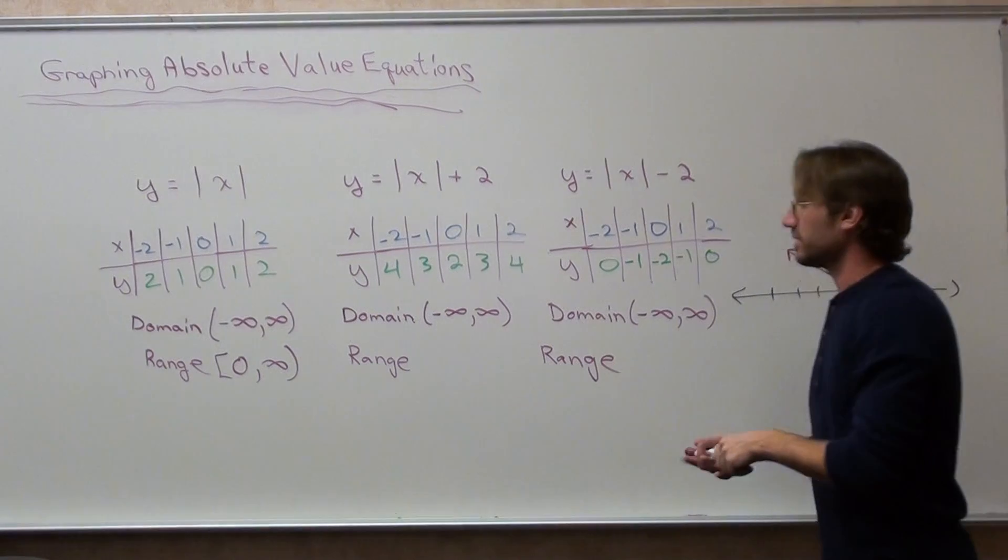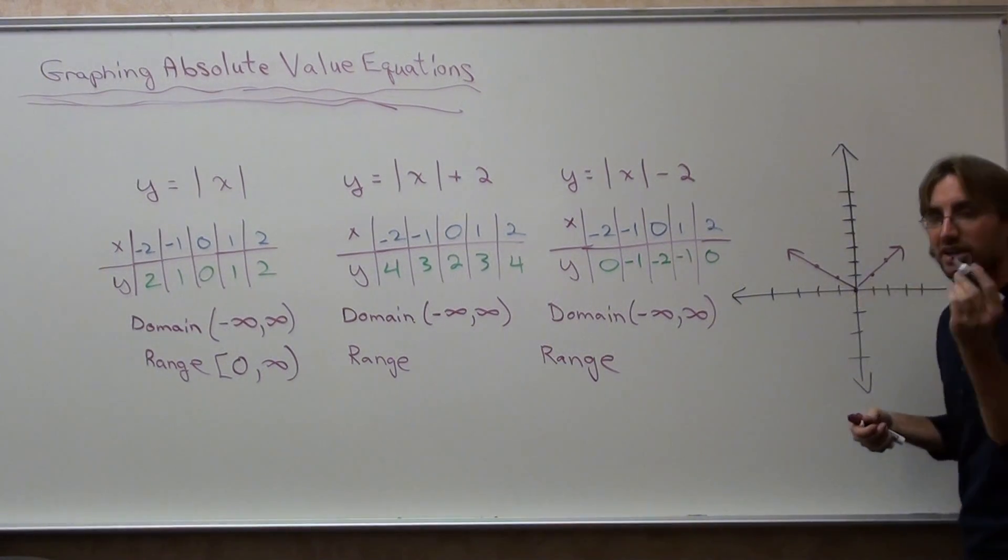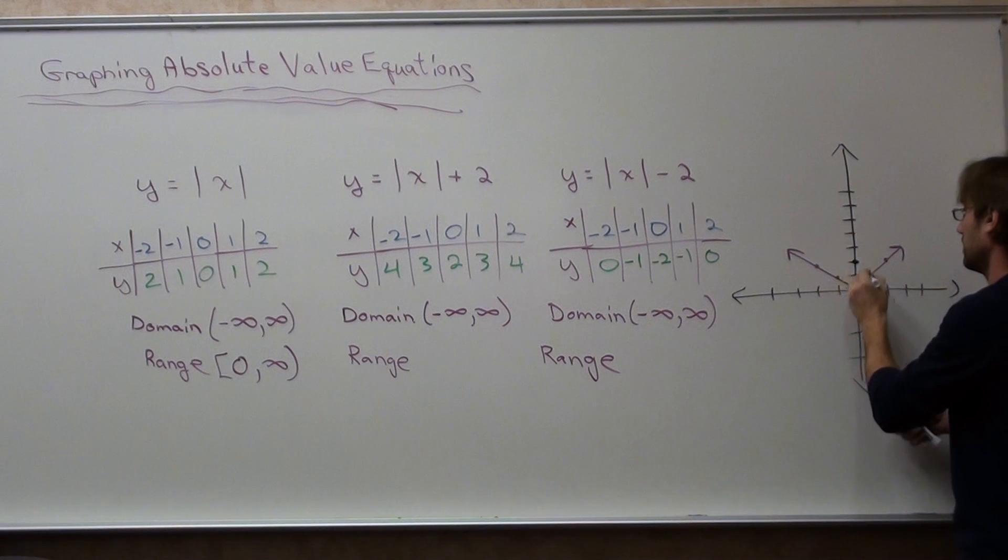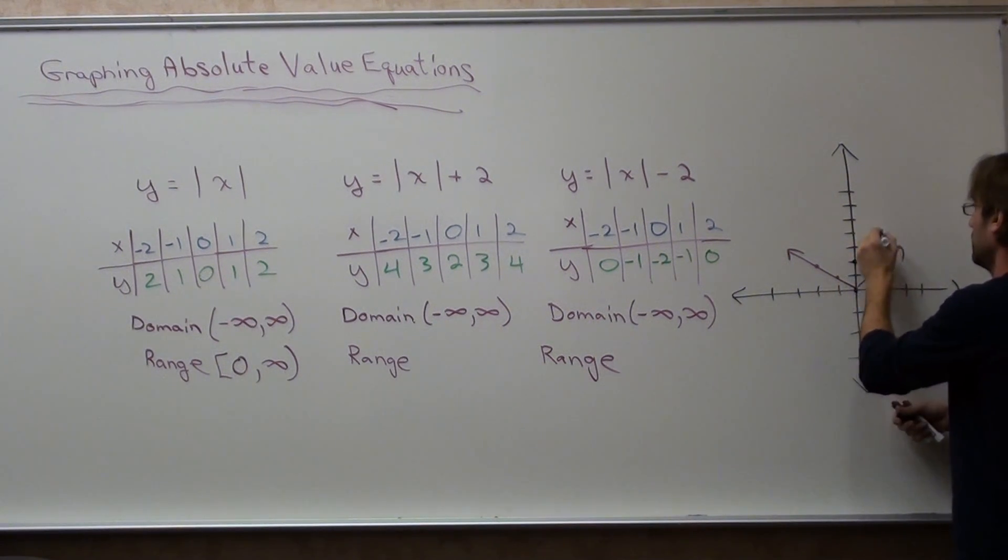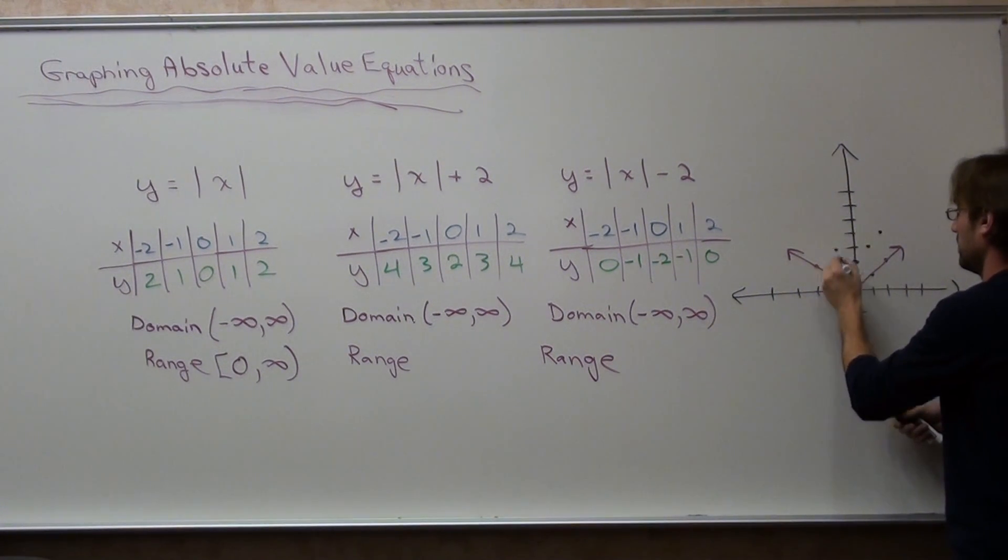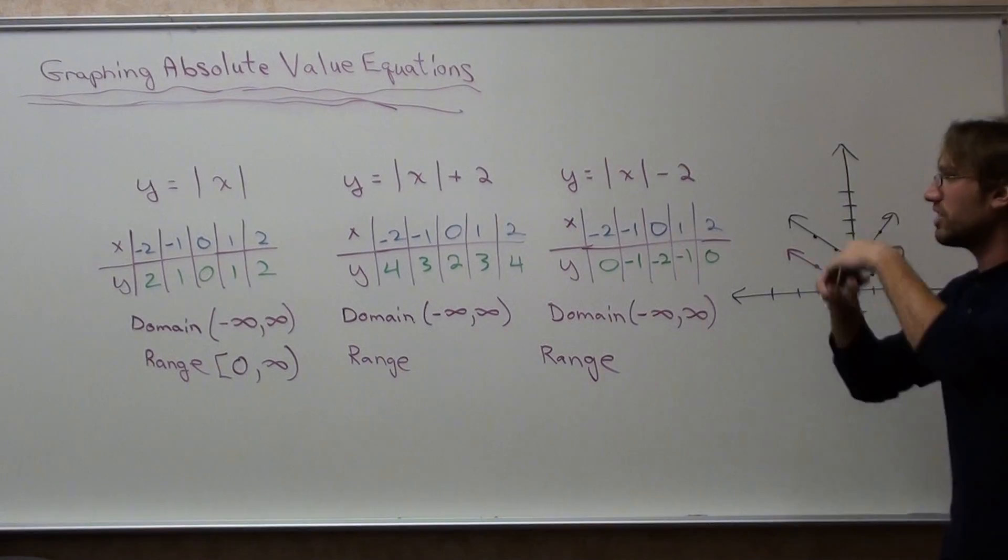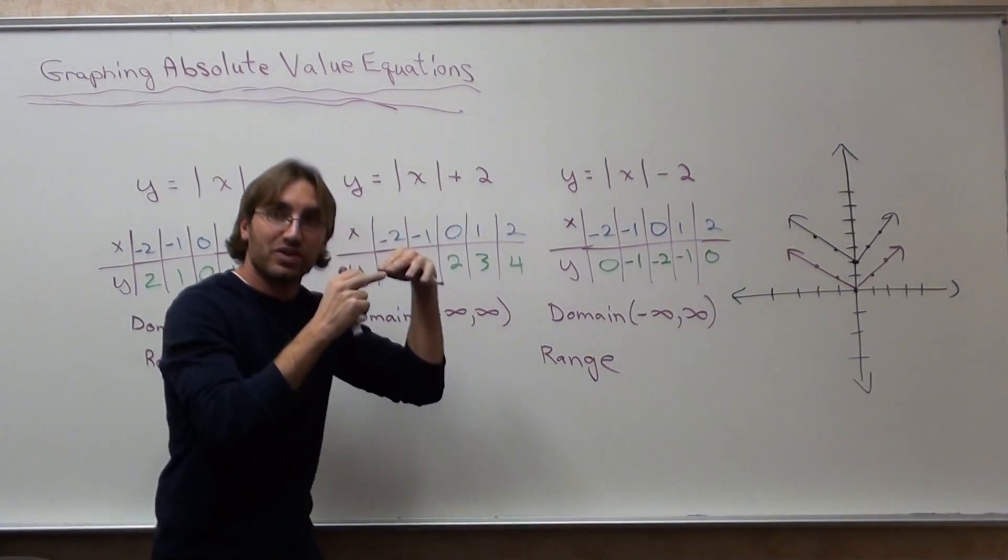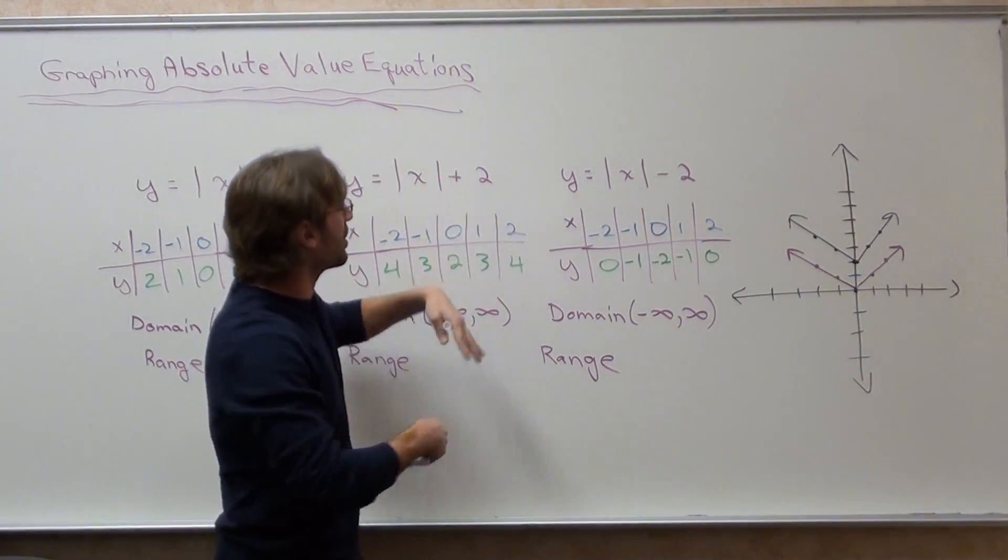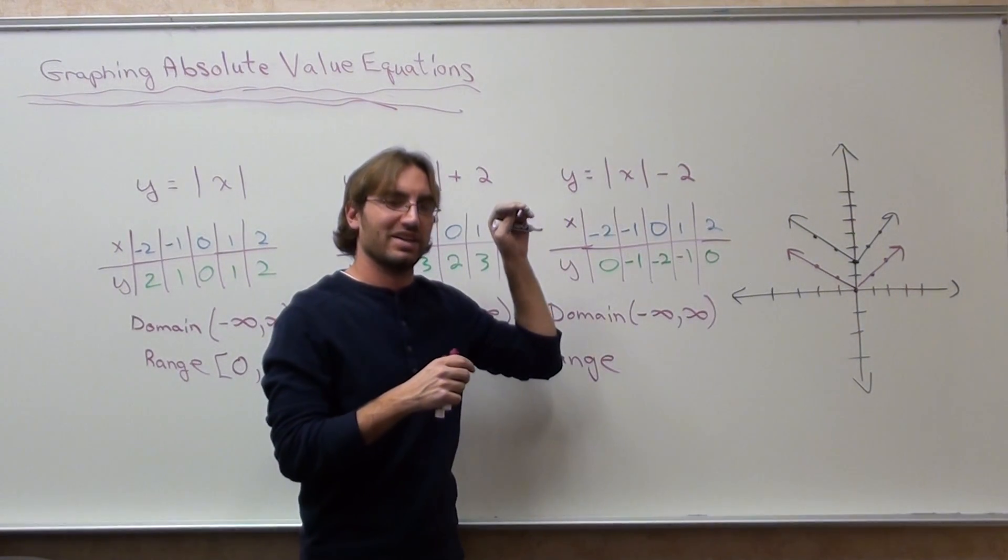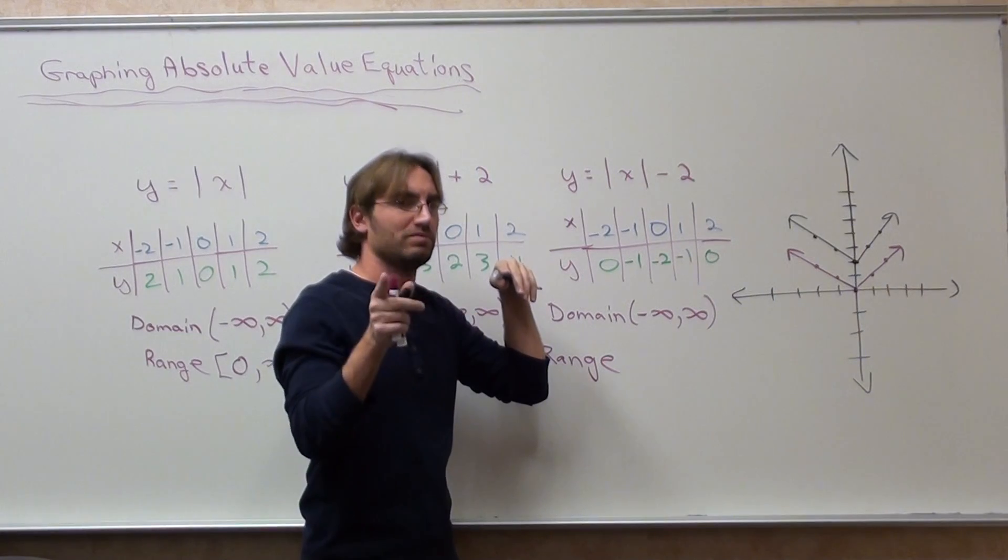I'm going to graph this one next in black. Okay, this one's different. It's shifted up. See, when you add 2 after the absolute value, if it's a positive number, it goes up. So when you subtract the number, where do you think it's going to start? Down.